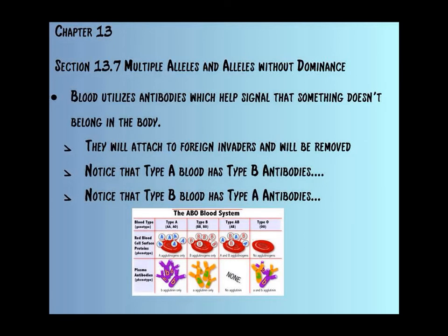An antibody is something classified under our body's immune system that helps signal that something doesn't belong in the body. Antibodies will attach themselves to bacteria, viruses, anything that would cause illness and tell the body this cell, bacteria, or virus is not supposed to be here — then white blood cells will attack and kill it. In the blood: type A blood has anti-B antibodies, so if you put anything of the B variety into someone with A blood, it will attack and kill it, and vice versa. Type B blood has type A antibodies. With type AB blood, I have none — so any blood, A, B, AB, or O that goes into my system will not be attacked.